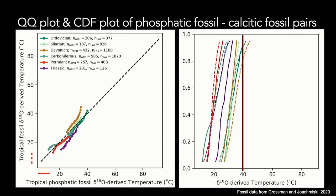I want to show comparisons of distributions of data by period. Starting with the cumulative distribution function for phosphatic fossils versus calcitic fossil pairs, using CDF plots colored by period. Apatite and calcite agree really well in their distribution for the Ordovician, the Permian, the Carboniferous, and the Devonian — you can also see this in the QQ plot where we're plotting the quantiles against each other.